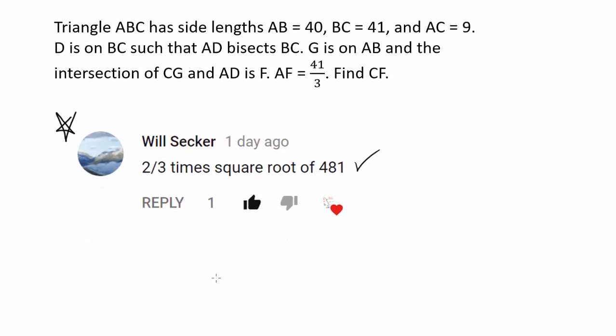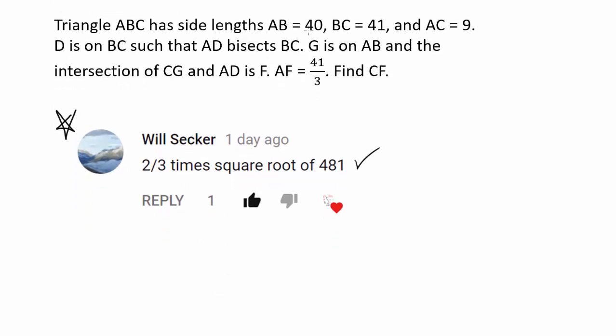So let's go over this question. Triangle ABC has side lengths 40, 41, and 9. And one of the first things to realize is that this triangle is a right triangle because 40, 41, and 9 are a Pythagorean triple.